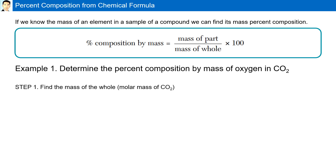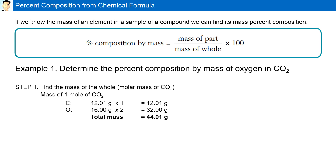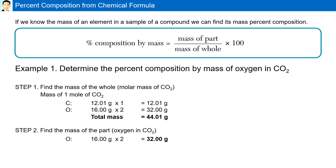The first step is to find the mass of the whole — the molar mass of CO2, which is 44.01 grams. Step 2 is to find the mass of the part, the oxygen in CO2. It is equal to 32 grams because there are two atoms of oxygen in carbon dioxide.